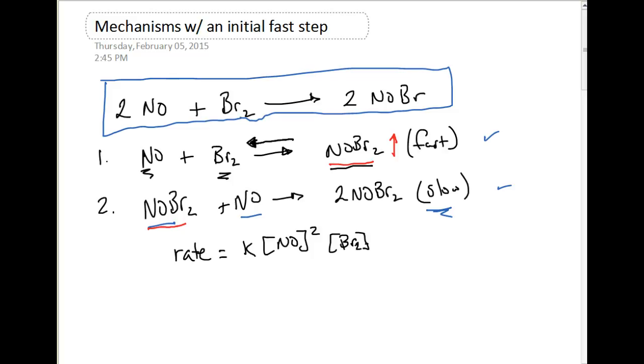What we can do in a rate law is because this first one is listed as fast, and often times they'll even list this as a fast equilibrium. And remember equilibrium is something that has equal rates of forward and reverse reactions. So fast equilibrium occurs. So what we can do is we can take the product of this fast equilibrium and we can plug it in down here.